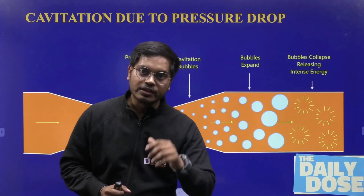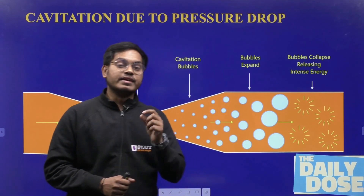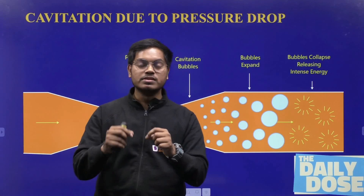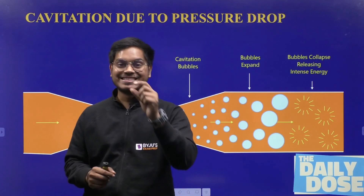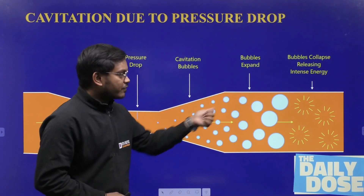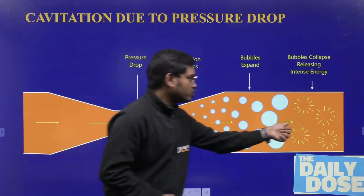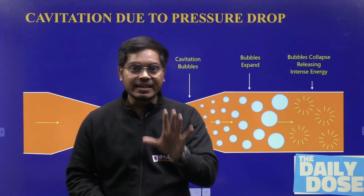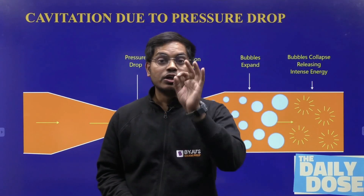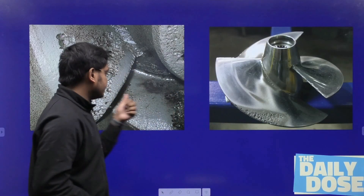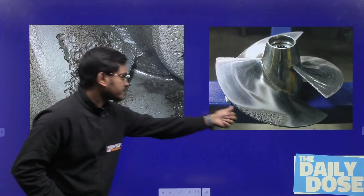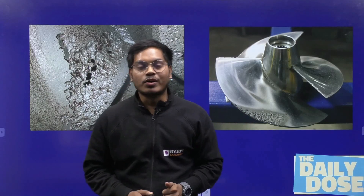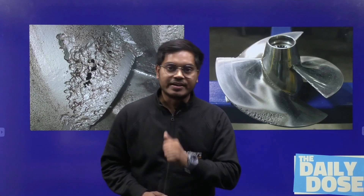As soon as the boiling begins, there will be formation of bubbles, and inside the bubbles we will have steam. These bubbles will then bombard on the inner wall of the pipe, leaving cavity-like damage. This phenomenon is actually called cavitation.